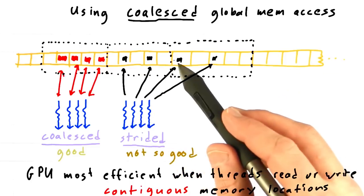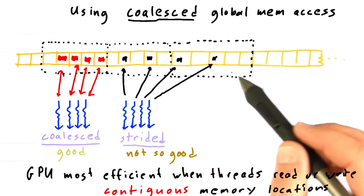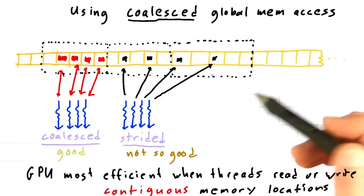You can probably see that the larger the stride between my threads, the more total memory transactions I'm going to have to do, and the lower my performance will get.